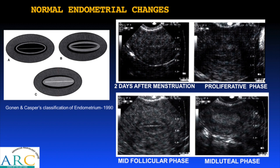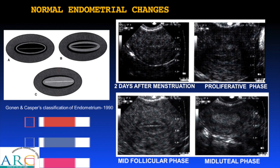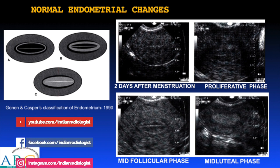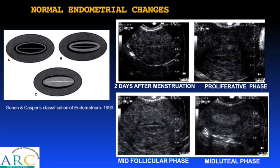The endometrium also undergoes significant changes around the mid-follicular stage as well as the early luteal stage, where the glands become very coiled and prominent with a lot of fluid, and that is what is reflected in the ultrasound appearance as well.